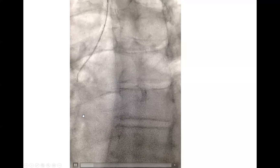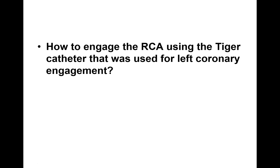Once you've engaged the left coronary, the next step is to engage the right coronary — using the same Tiger or Jackie catheter you used for the left. That's the standard approach. If I have a problem engaging the left, I usually switch to Judkins Left 3.5 because of the shorter arm that allows engaging from below in difficult cases.